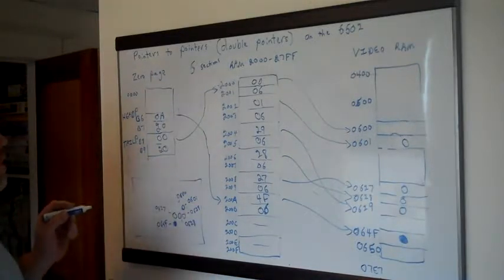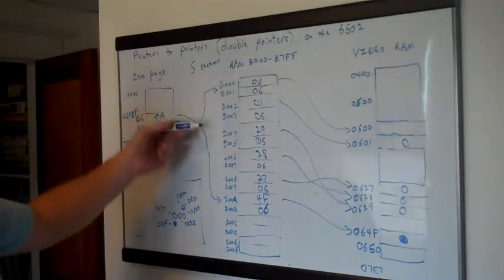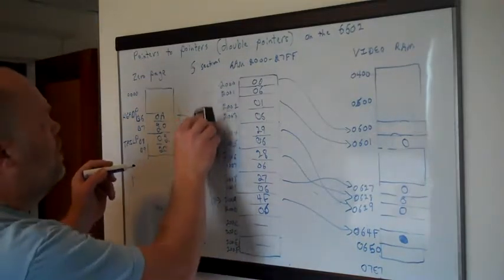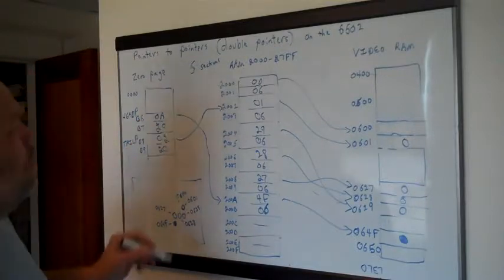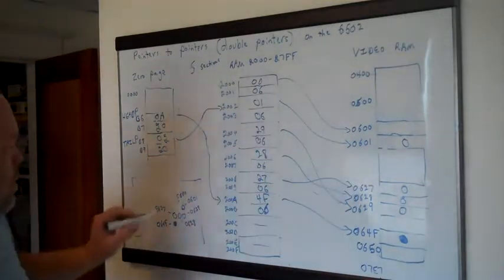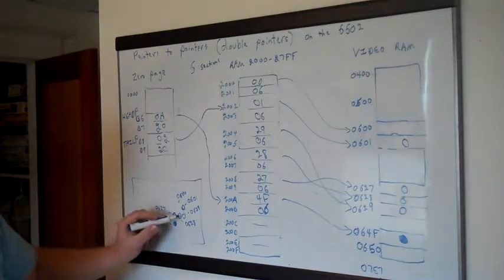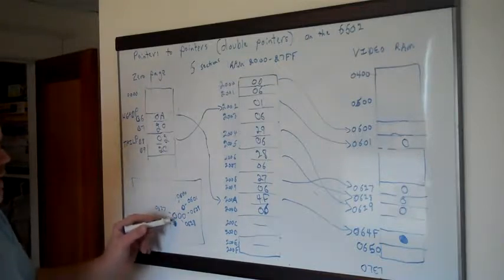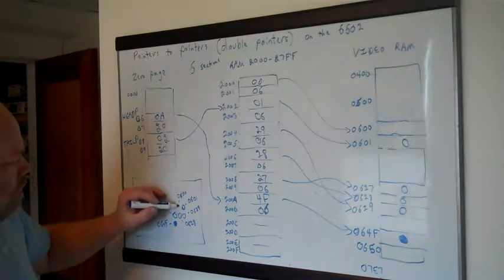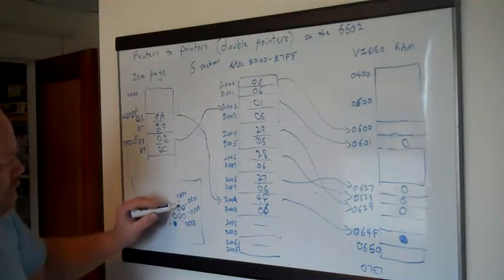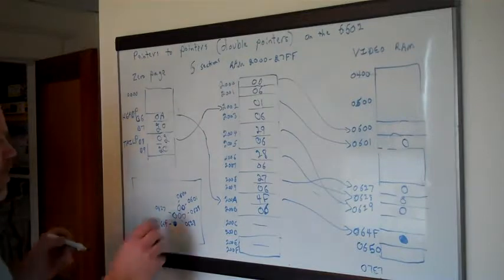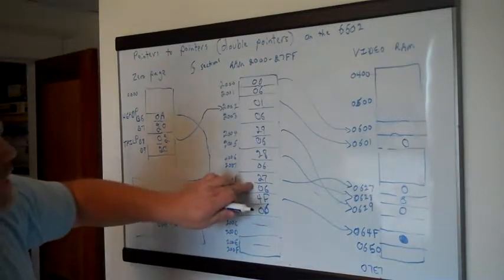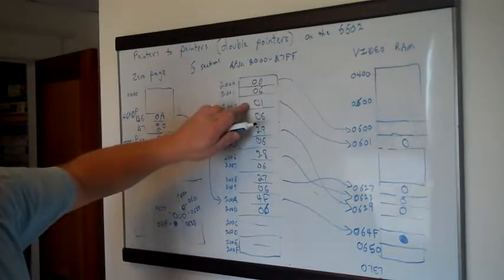Now we need to increment tail P as well, which again is incremented by 2 because we're walking through a list of pointers. So tail P goes up to 2002, so that it now points to 0601, which is the next character. That way you know which one is now the tail. You couldn't tell just by looking at the screen which direction the worm came from — that's why we have to have this ordered list so we can tell: this is the head, then this, then this, and this is the tail.